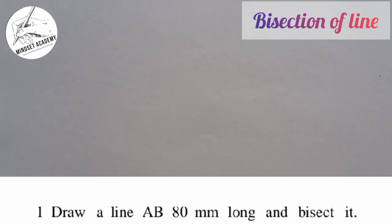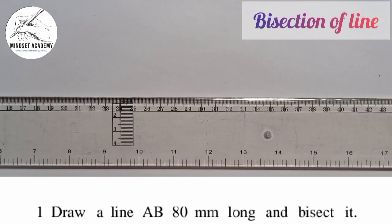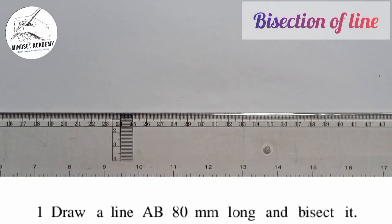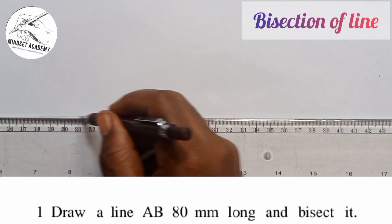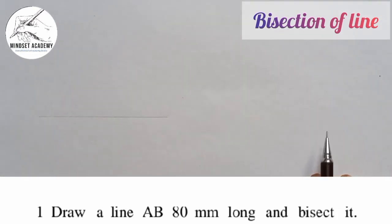To draw a line AB 80 millimeter long, move your T-square and draw the line. Let's assume this is our line. I'll draw a faint line.